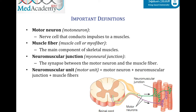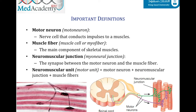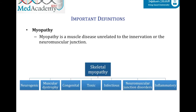The neuromuscular unit is composed of one motor neuron, many neuromuscular junctions, and many muscle fibers. The number of muscle fibers in one neuromuscular unit can vary between 10 fibers in places requiring fine movements like the hand, and 2,000 fibers in large muscles like the back. A histological image shows a motor neuron axon, muscle fibers, and the neuromuscular junction.